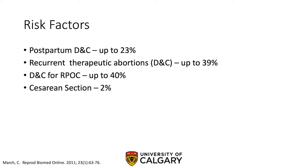Synechiae are thought to arise due to traumatization of already fragile endometrium. Procedures commonly associated with intrauterine adhesions include postpartum D&C, recurrent therapeutic abortions, and D&C for retained products of conception. Caesarean section is also felt to be a risk factor given the possibility to traumatize the gravid endometrium.